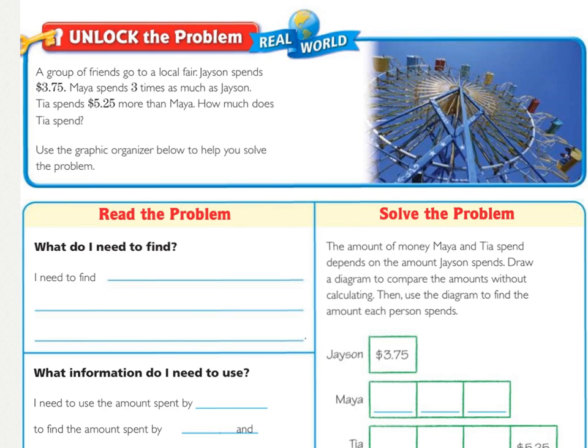Unlock the problem. A group of friends go to a local fair. Jason spends $3.75. Maya spends 3 times as much as Jason. Tia spends $5.25 more than Maya. How much does Tia spend?